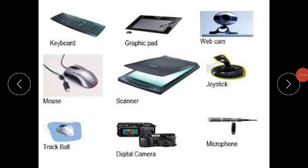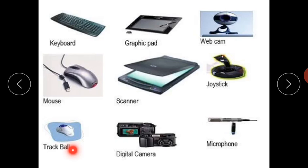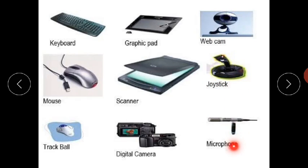Let's move on. There are input and output devices. Input means whatever instruction we are giving to the computer — that is input. We have a graphic pad for writing text, a webcam which captures pictures, joysticks for games, a microphone for recording sound, and a digital camera for pictures. So these are all input devices.